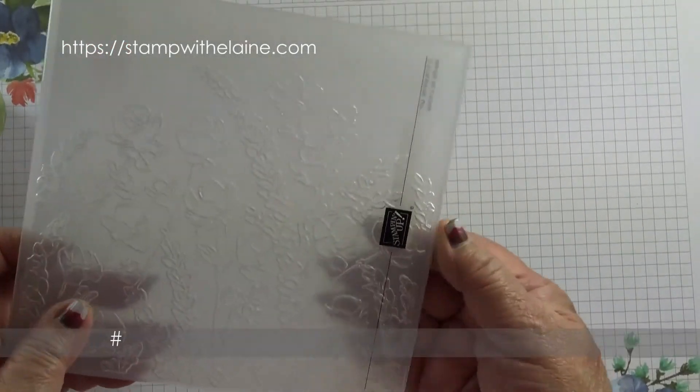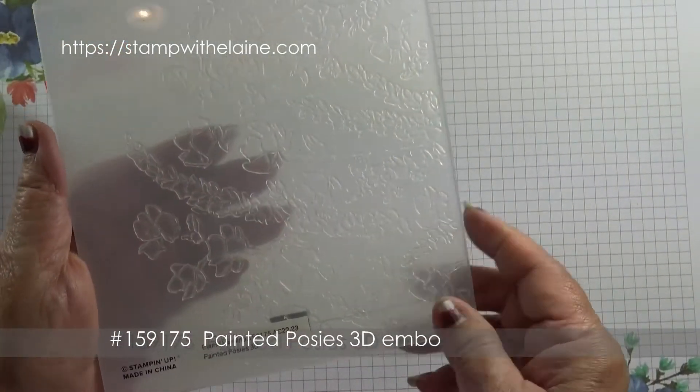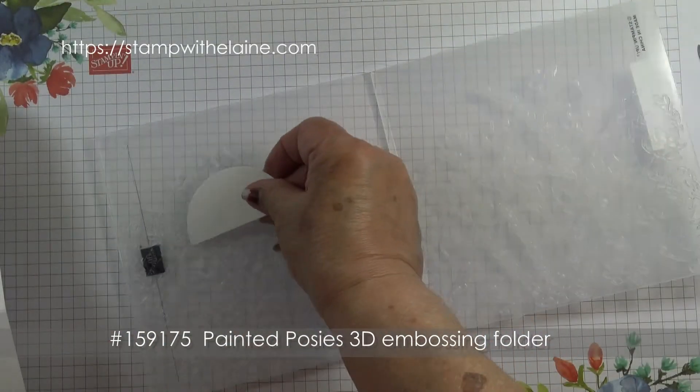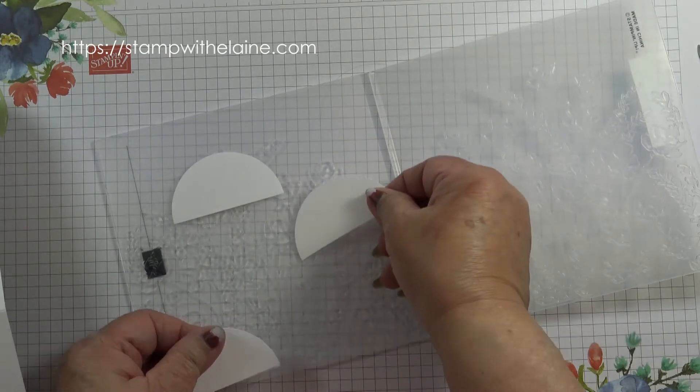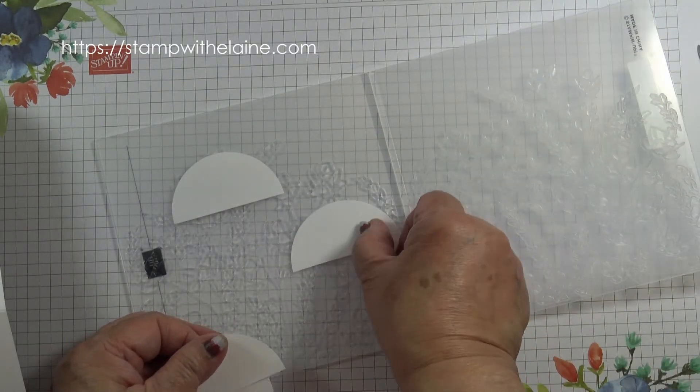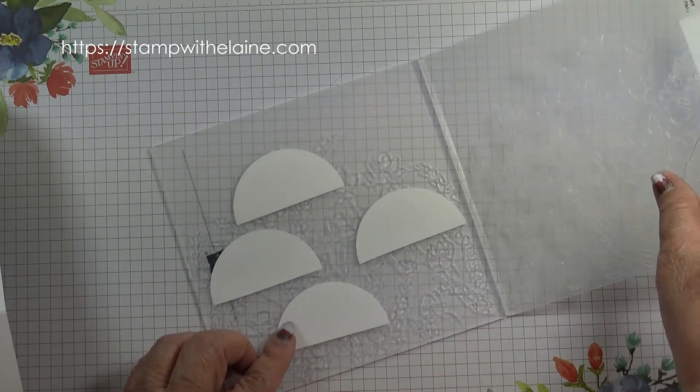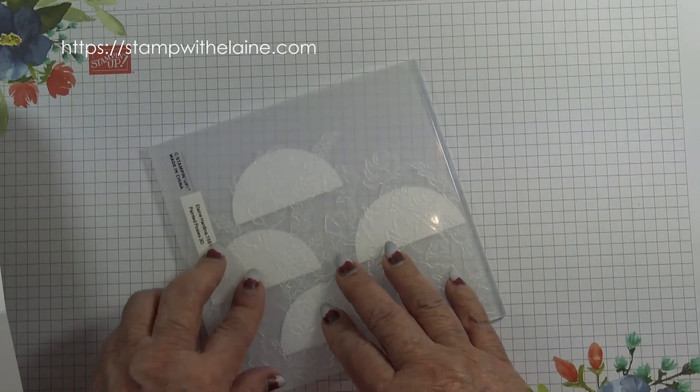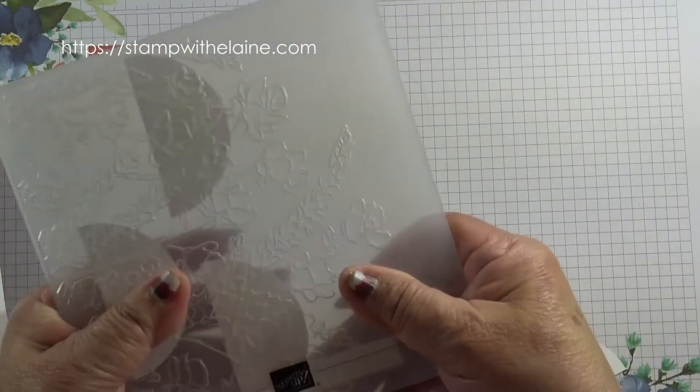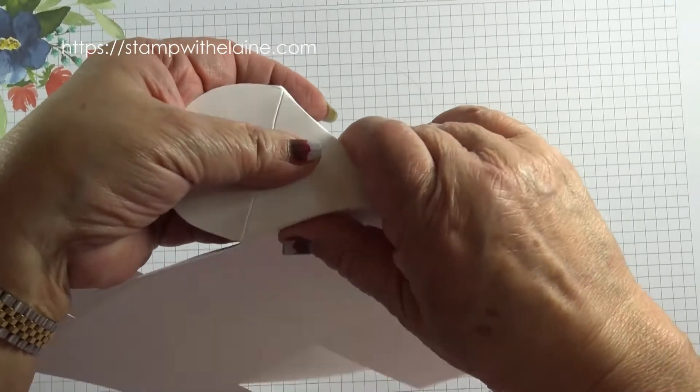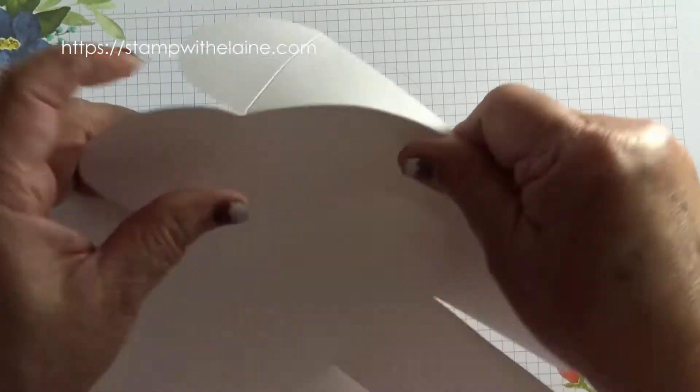Painted Posey's 3D embossing folder. This is new. So pop the semicircles I cut previously and lay them on top. Make sure that there is a flower on each one. And then just go and emboss that with just the grey plate.